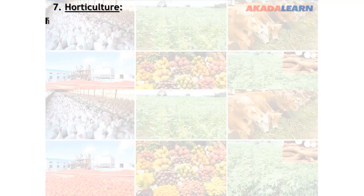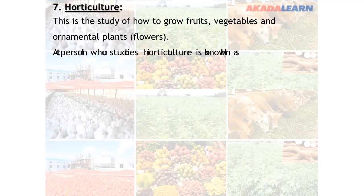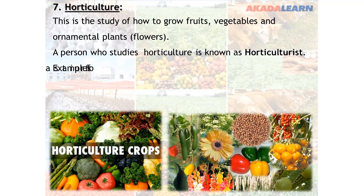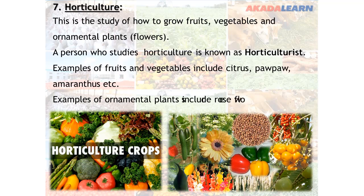Then we have horticulture. Horticulture is concerned with how to grow fruits, vegetables, and ornamental plants — that is, flowers. A person who studies horticulture is known as a horticulturist. Examples of fruits and vegetables include citrus, purple amaranthus, and many more, while examples of ornamental plants include rose flowers.